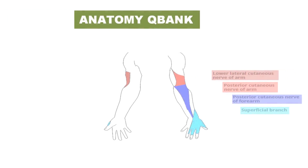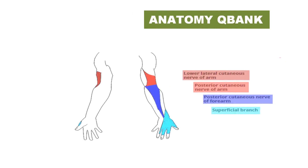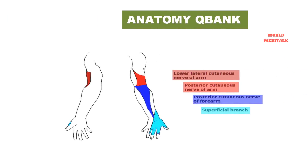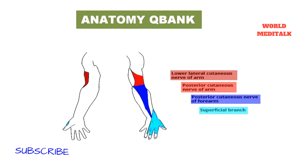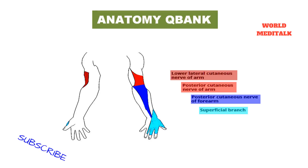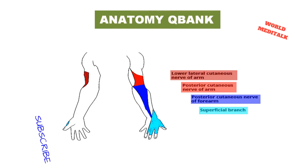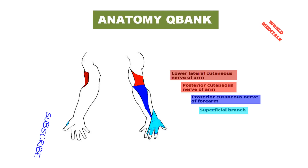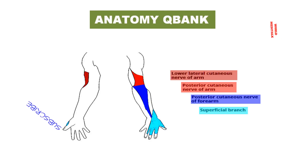Pain in the forearm resembling tennis elbow may be prominent. Initially there is acute pain lasting for several days to weeks. If the lesion is above the wrist, patients complain of isolated sensory changes and paresthesia over the back of the hand without motor weakness.